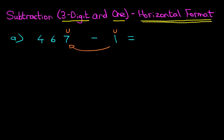So the simple subtraction we do is 7 minus 1. And if we are minusing 1, we are simply counting back. So 7 minus 1 is 6. Therefore, the answer is 466.